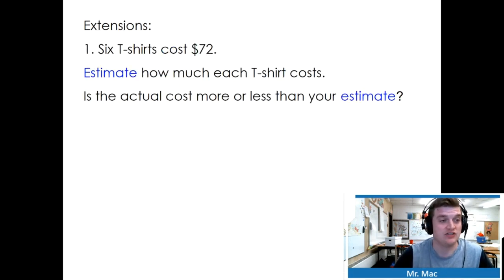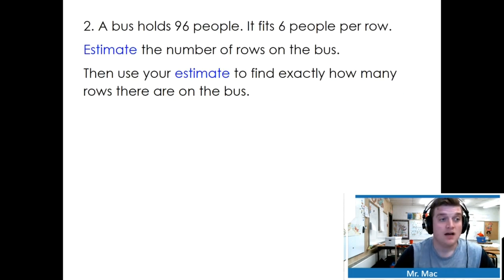6 t-shirts cost $72. Estimate how much each t-shirt costs. Is the actual cost more or less than your estimate? The only easy number I know of with 72 is 60. 60 divided by 6 equals 10. So if my estimate is about $10, is that going to be more or less than the actual? If my estimate's $10, 60 is less than 72. So this is going to be less than my actual answer.